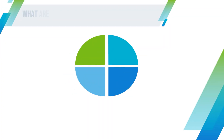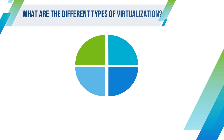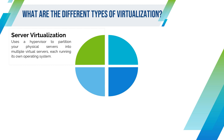What are the different types of virtualization? Server virtualization uses a hypervisor to partition your physical servers into multiple virtual servers, each running its own operating system.